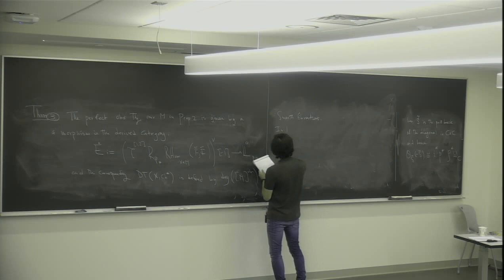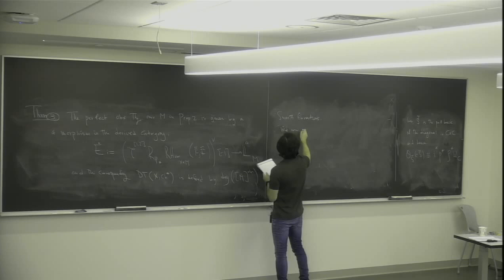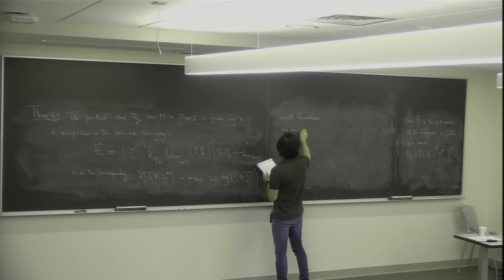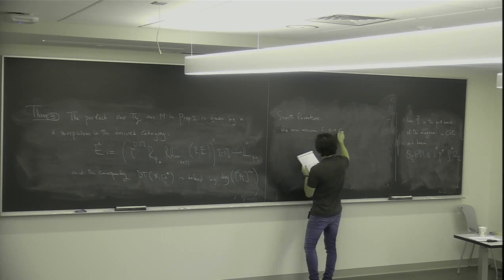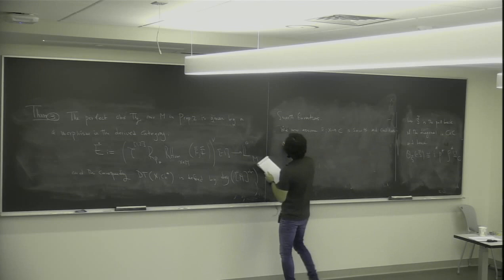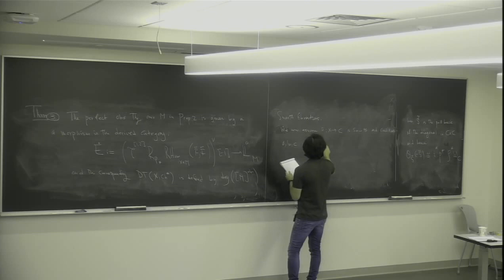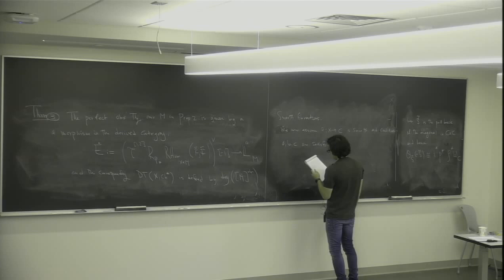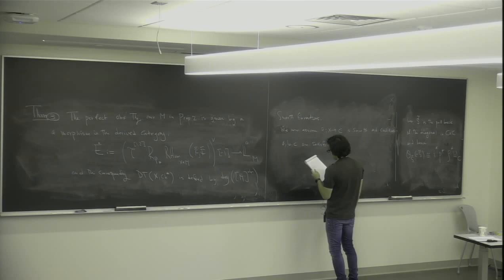Now we assume that π: X → C is a smooth fibration — every fiber is smooth and the total space is smooth — and conditions a, b, c are satisfied.